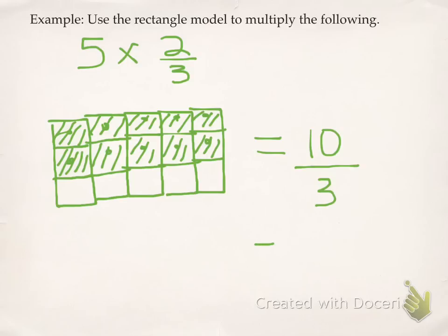And again, I have to change that to an improper fraction. 3 can go into 10 three times with 1 left over. So 5 times 2 thirds is actually 3 and 1 third.